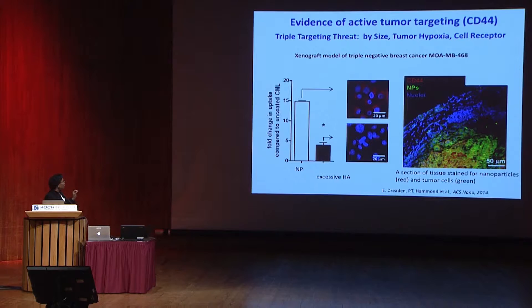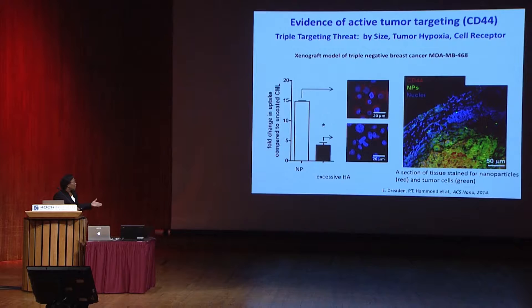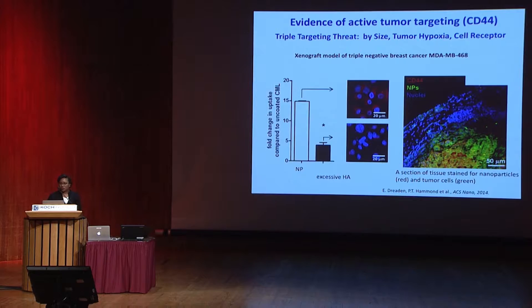We can use this as a way of essentially achieving a triple threat: nanoparticle targeting based on its size, enhanced uptake from the tumor microenvironment, and use of the cell receptor to further enhance tumor cell uptake. Here we can see the relative uptake observed in a layer-by-layer coated versus an uncoated system, and we can titrate away some of these interactions by adding excess HA—seeing something like a 15-fold increase or enhancement. In this tumor section using IV injection, we can see the nanoparticles highly accumulated within a triple negative breast cancer cell line that overexpresses CD44.